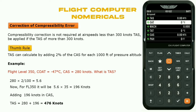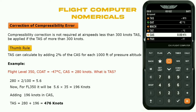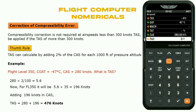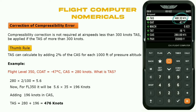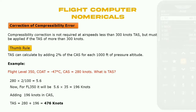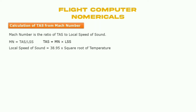Now we'll verify on the flight computer. Go to the air speed column, enter outside air temperature of minus 47 degrees, CAS of 280 knots, and pressure altitude of 35,000 feet. The flight computer gives TAS of 481 knots.